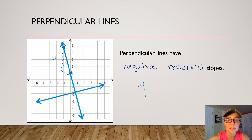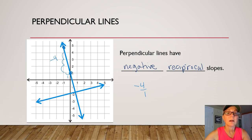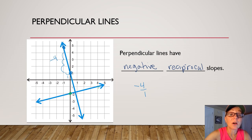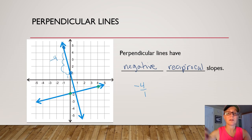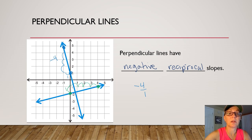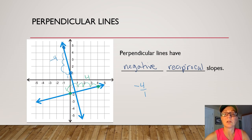I'll use green for my other line. I'm going to pick two points on my line. And to get from left to right, I rise one and I run one, two, three, four. And that's the slope of one fourth.